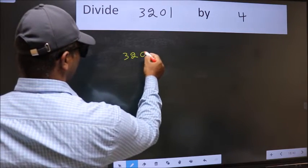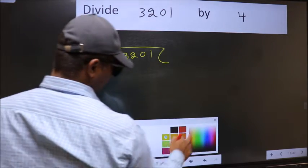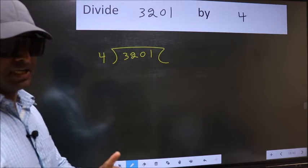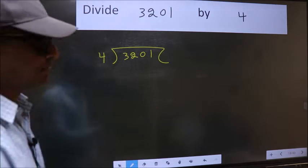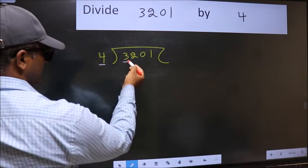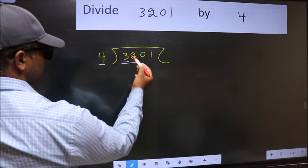3201 and 4 here. This is your step 1. Next, here we have 3 and here 4. 3 is smaller than 4, so we should take 2 numbers, 32.